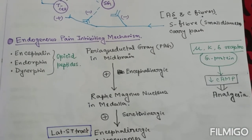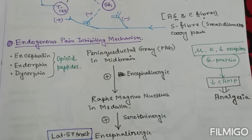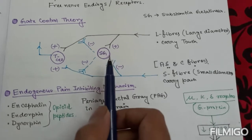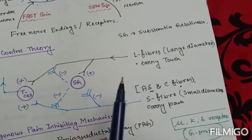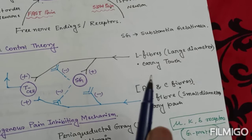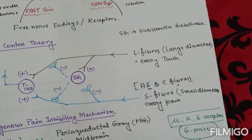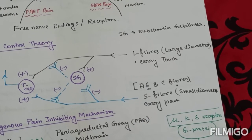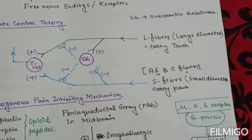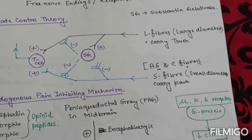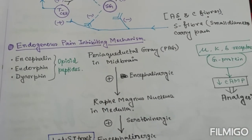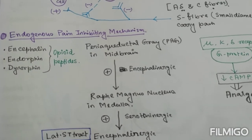Next is endogenous pain inhibiting mechanisms. This gate control theory is somewhat applied for acupuncture, for pain inhibiting mechanisms, where locally touching sensation may result in a pain inhibiting mechanism.